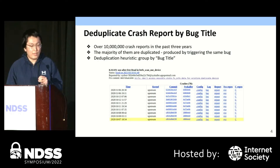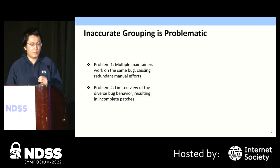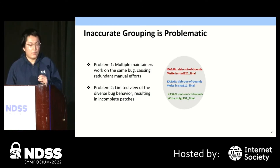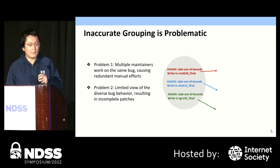On the slide, we have a list of crash reports produced at different times. Simply because they have the same bug title — use-after-free in the same function — all the crash reports are grouped together. Obviously, you can imagine the heuristic is inaccurate and problematic. On the right side of the slide, we use a concrete example to explain the problem. We have three bug titles that actually refer to the same bug based on our analysis, but using the bug title heuristic, they are mistakenly classified into three groups since they are associated with different functions.